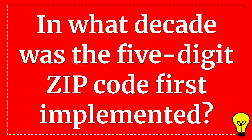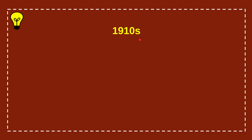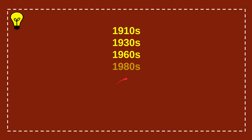In this video I'm going to give you the answer for this question: in what decade was the five-digit ZIP code first implemented? Here's a list of the options — first option is 1910s, second option is 1930s, the third option is 1960s, and the last option is 1980s.